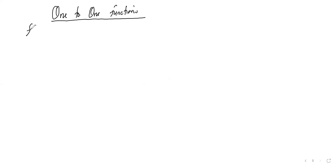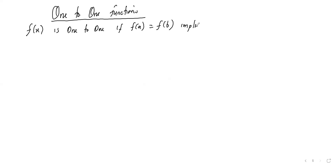Now we check one-to-one functions. f of x is one-to-one if f of a equals f of b implies a equals b.